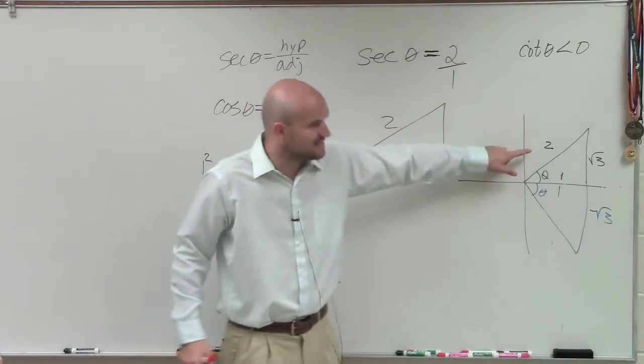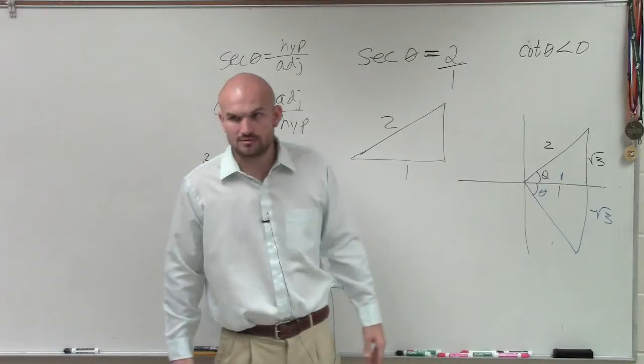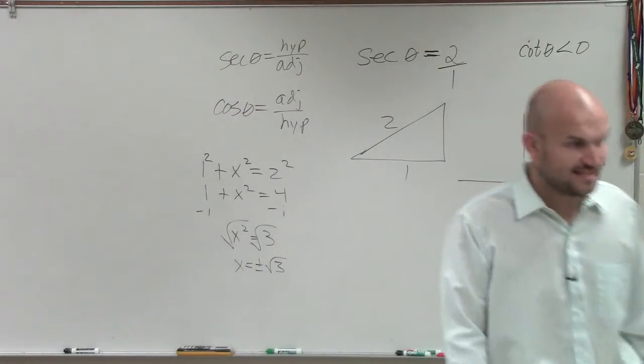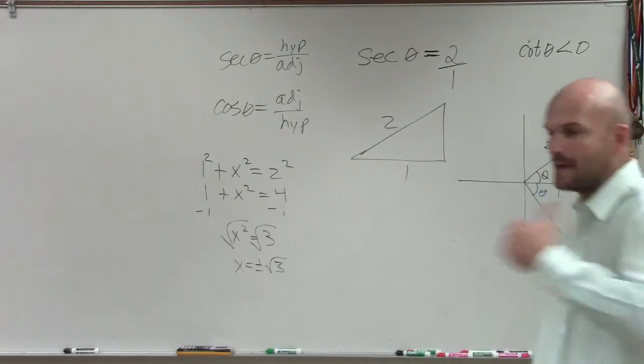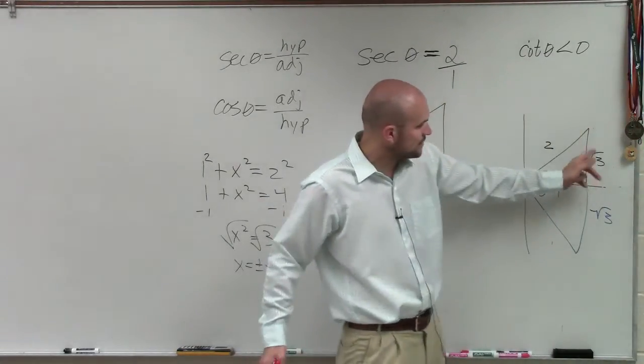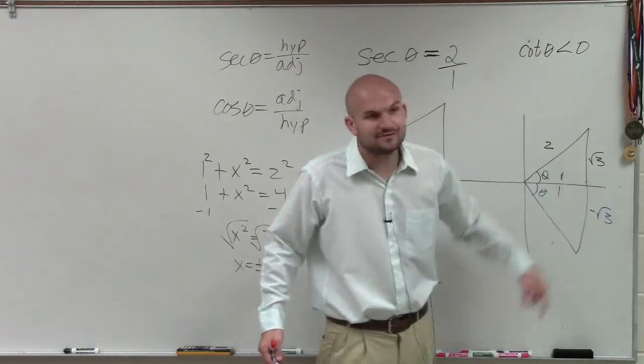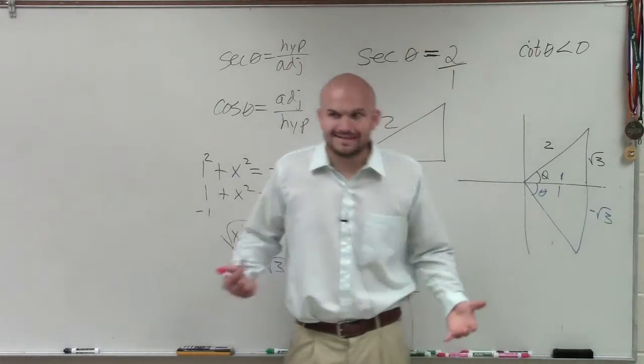Do both of these give me secant of 2? Do both of those triangles give me secant of 2? Yes, because secant of 2 is just hypotenuse over adjacent. It doesn't matter if it's positive square root of 3 or negative square root of 3. So we need to make a distinction.